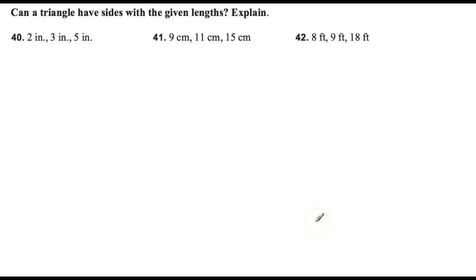Alright, let's look at number 40 through 42. Here I'll do number 40. It says, can a triangle have the sides with the given lengths explained? Remember what we did with the pasta noodles in class. We said that if two sides of a triangle are given, any two sides in the triangle, they have to add up to be larger than the third. So when I check this, if you want, you can just go through each combination. I could add 2 and 3, I could add 3 and 5, or I could add 5 and 2. 2 plus 3, is 2 plus 3 bigger than 5?